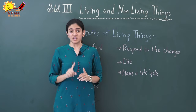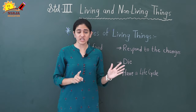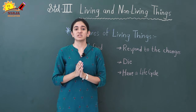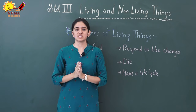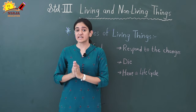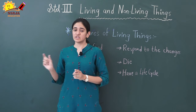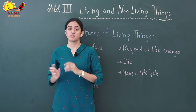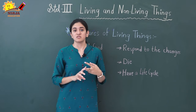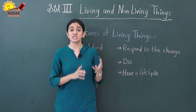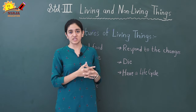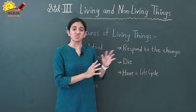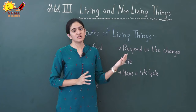In non-living things, some of them are natural non-living things and some of them are man-made non-living things. Man-made non-living things include table, chair, book, and phone. Natural non-living things include sun, moon, clouds, and mountains — these are not made by humans, they are naturally formed, but they are all non-living.